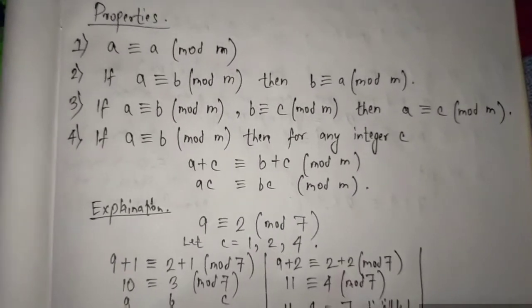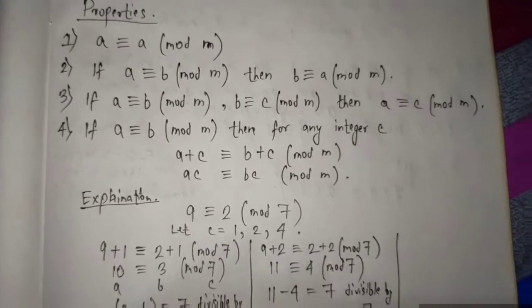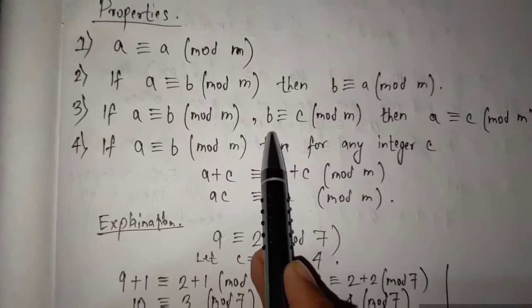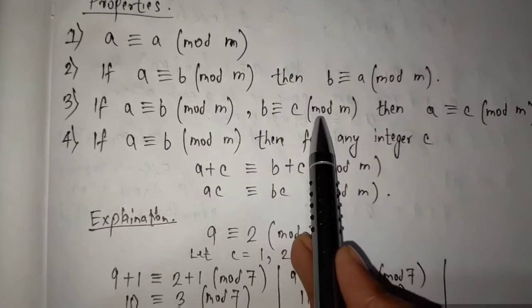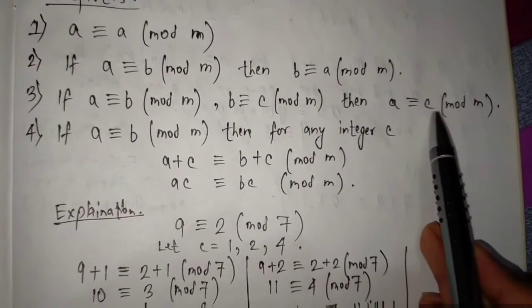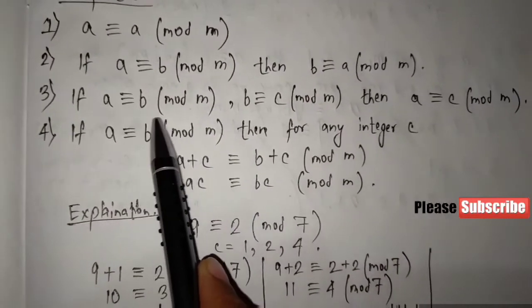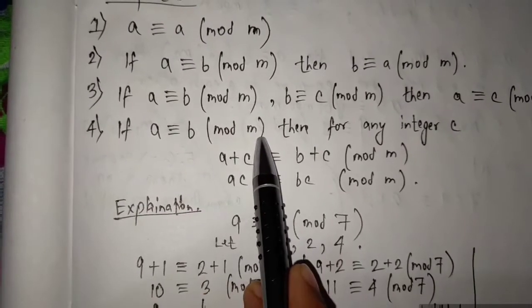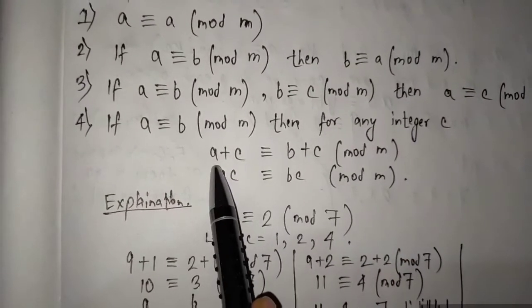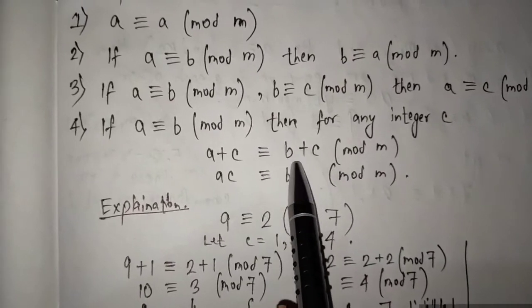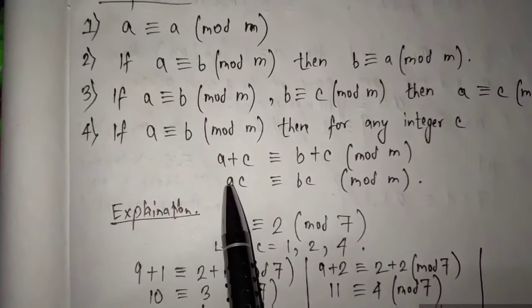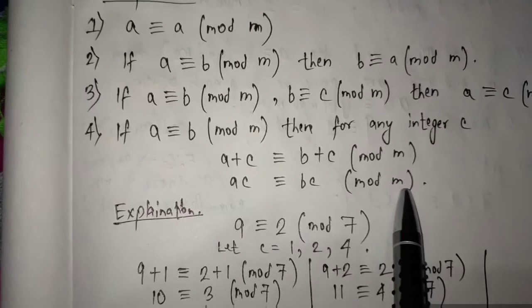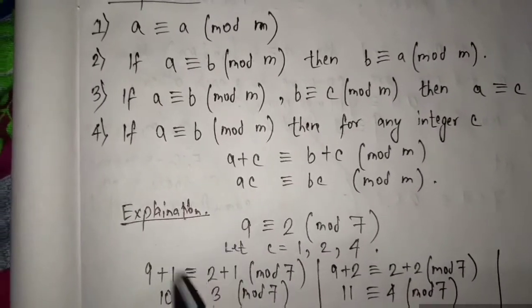You can take a screenshot here. Now let's move to the third rule: if A congruent B mod M and B congruent C mod M, then A congruent C mod M. Now let's go to the fourth theorem: if A congruent B mod M, then for any integer C we have A plus C congruent B plus C mod M, and A times C congruent B times C mod M.